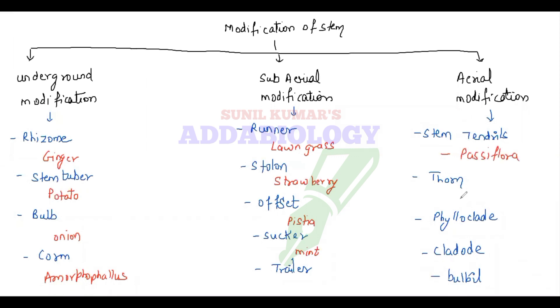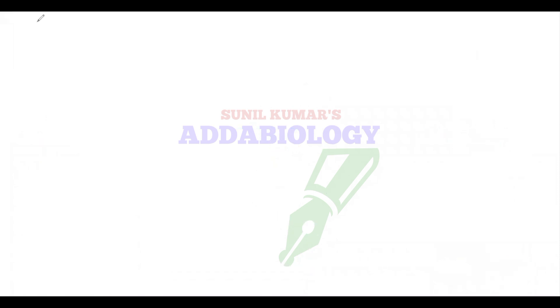Stem tendrils — example Passiflora; thorn — Duranta; phylloclad — Opuntia; cladode — Asparagus; bulbil — Dioscorea. These are the different modifications that we need to study.